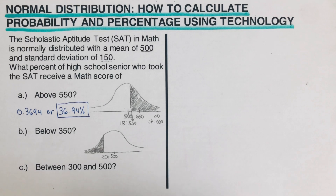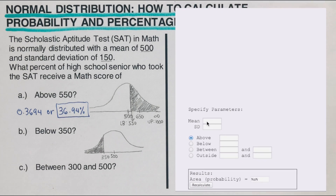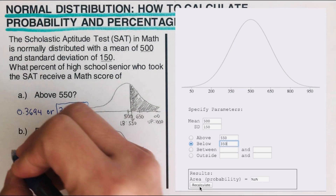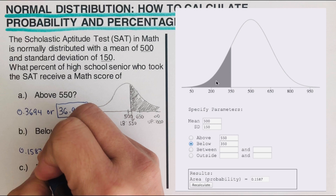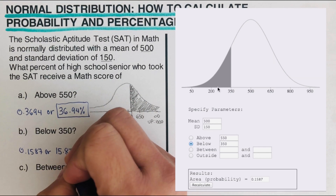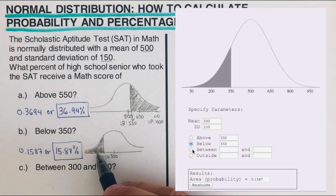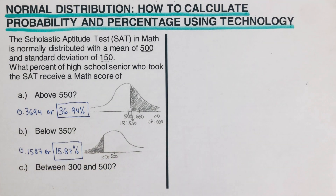We have two methods to determine this area: the applet and the calculator. Starting with the applet, make sure 500 and 150 are entered for mean and standard deviation. Select 'below,' type in 350, and hit recalculate. The value is 0.1587, or 15.87% — meaning 15.87% of students scored below 350. The shaded area on our picture matches the area shown in the applet.